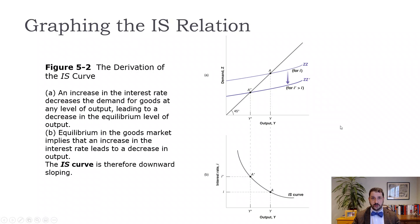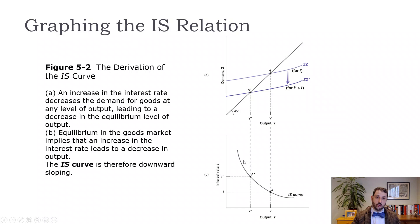In panel A, when the interest rate goes up, investment goes down, GDP goes down, and we move to a lower equilibrium from A to A prime. Similarly, when the interest rate goes down, investment goes up, GDP goes up, and we move to a new equilibrium. So when the interest rate is higher, GDP is lower, and when the interest rate is lower, GDP is higher. We can translate that into the IS curve shown in panel B.